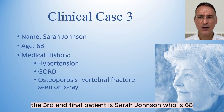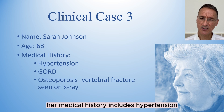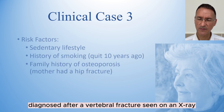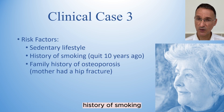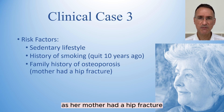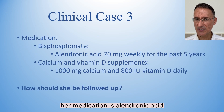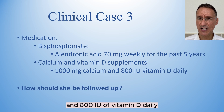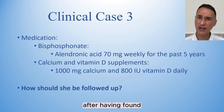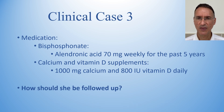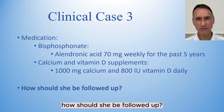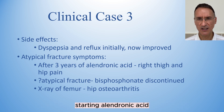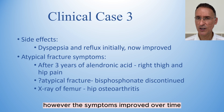The third and final patient is Sarah Johnson, who is 68. Her medical history includes hypertension, gastroesophageal reflux disease, and osteoporosis diagnosed after a vertebral fracture seen on an x-ray. Risk factors include a sedentary lifestyle, history of smoking having quit 10 years ago, and a family history of osteoporosis as her mother had a hip fracture. Her medication is alendronic acid 70 mg once weekly for the past 5 years, as well as 1000 mg of calcium and 800 international units of vitamin D daily, after having found that her dietary calcium and sun exposure were insufficient. Her eGFR is 60. Sarah experienced dyspepsia and occasional reflux during the initial months of starting alendronic acid; however, the symptoms improved over time and she continued treatment.